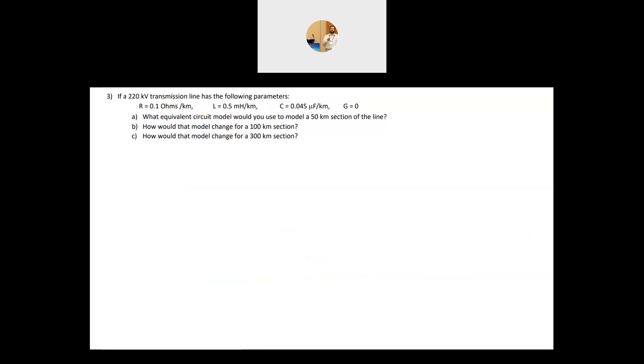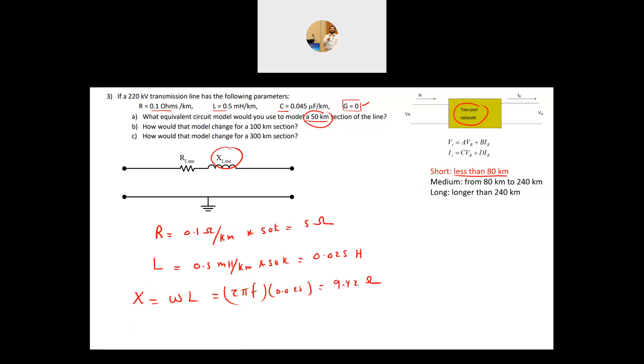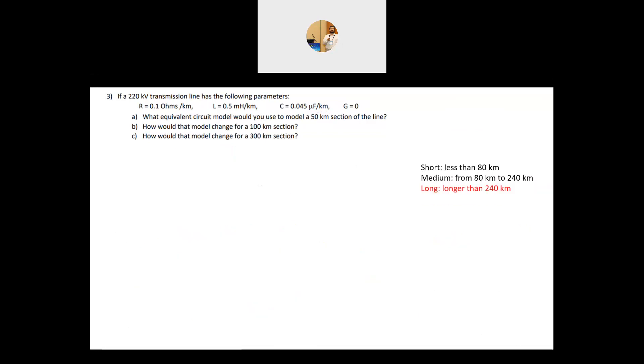Finally, when we have the line is more than 240 kilometers, it's a long line. Now when we use a long line, we use basically what we call distributed model. So that model is something like this. It's not a lumped model. These models called lumped model. What do I mean lumped model? The effect of R, the effect of L, the effect of C are all lumped in one or two locations, but when the line becomes too long, we cannot do that. So we will have what we call the distribution model. Just to give you a glimpse of that, so we'll have something like this. It's called distributed model.